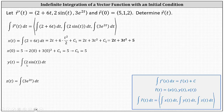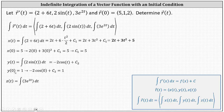Now let's consider y of t. The integral of 2 sine t with respect to t is equal to negative 2 cosine t plus c sub 2. The y component of r of 0 is equal to 1, so y of 0 must equal 1, which allows us to determine c sub 2. Substituting 0 for t and setting y equal to 1 gives negative 2 times cosine 0 plus c sub 2 equals 1. Be careful — cosine 0 is equal to 1, so we add 2 to both sides, giving c sub 2 equals 3. Therefore y of t equals negative 2 cosine t plus 3.